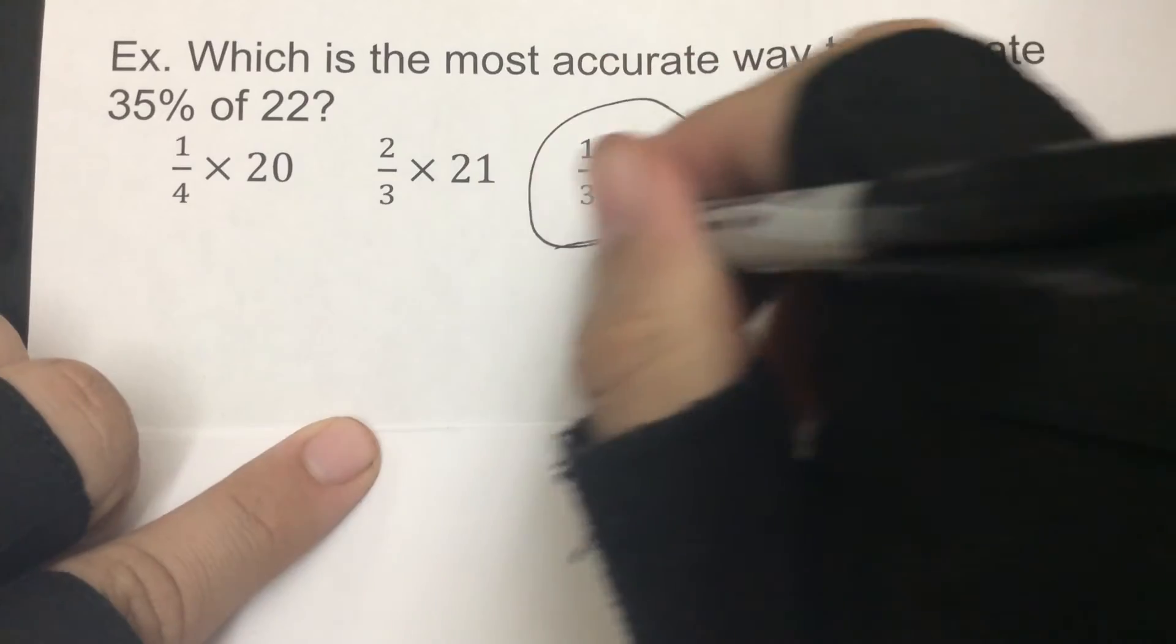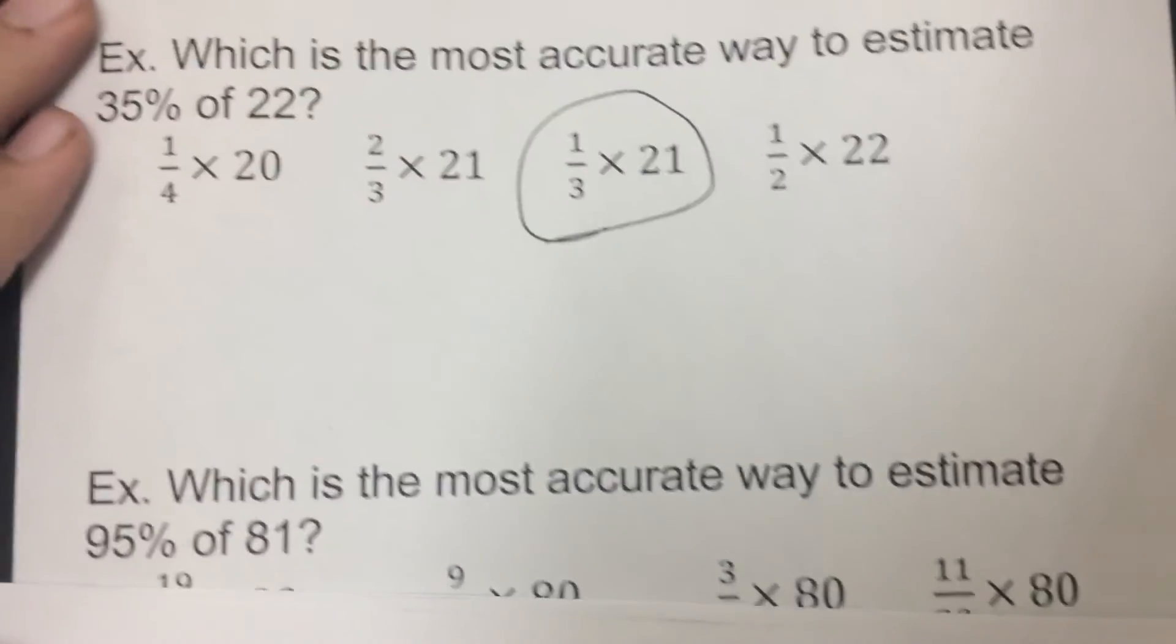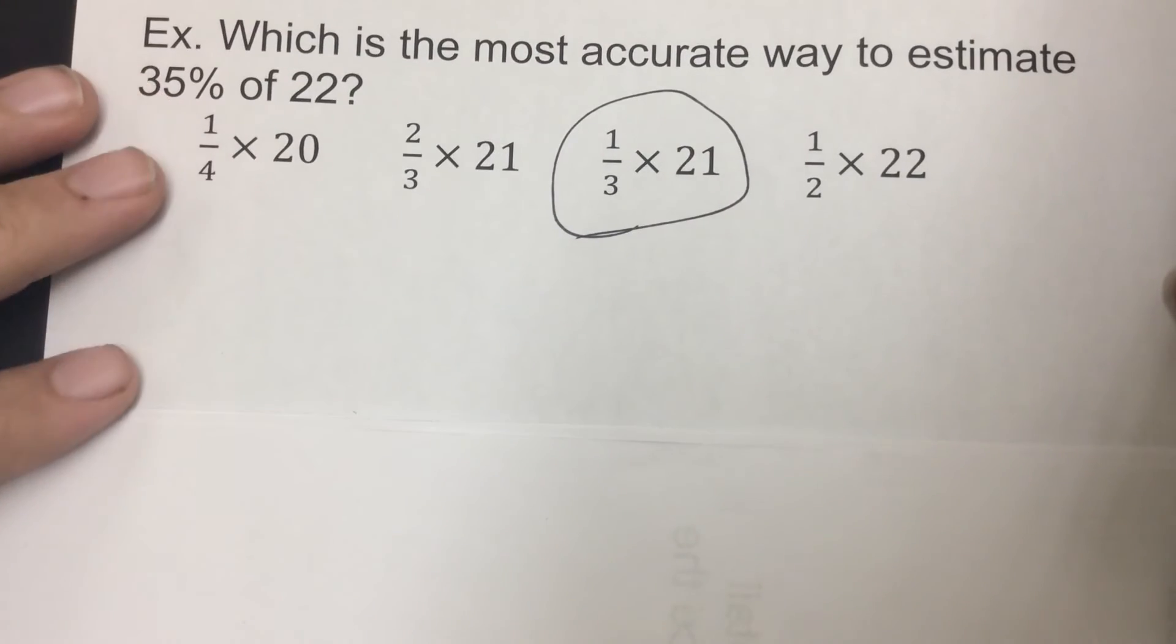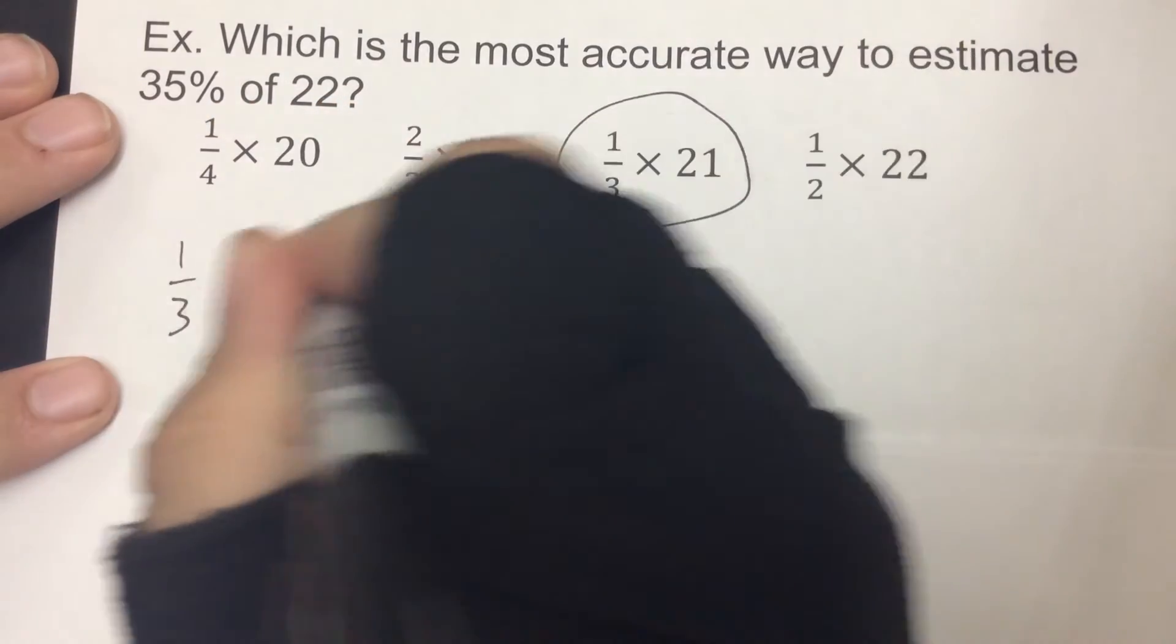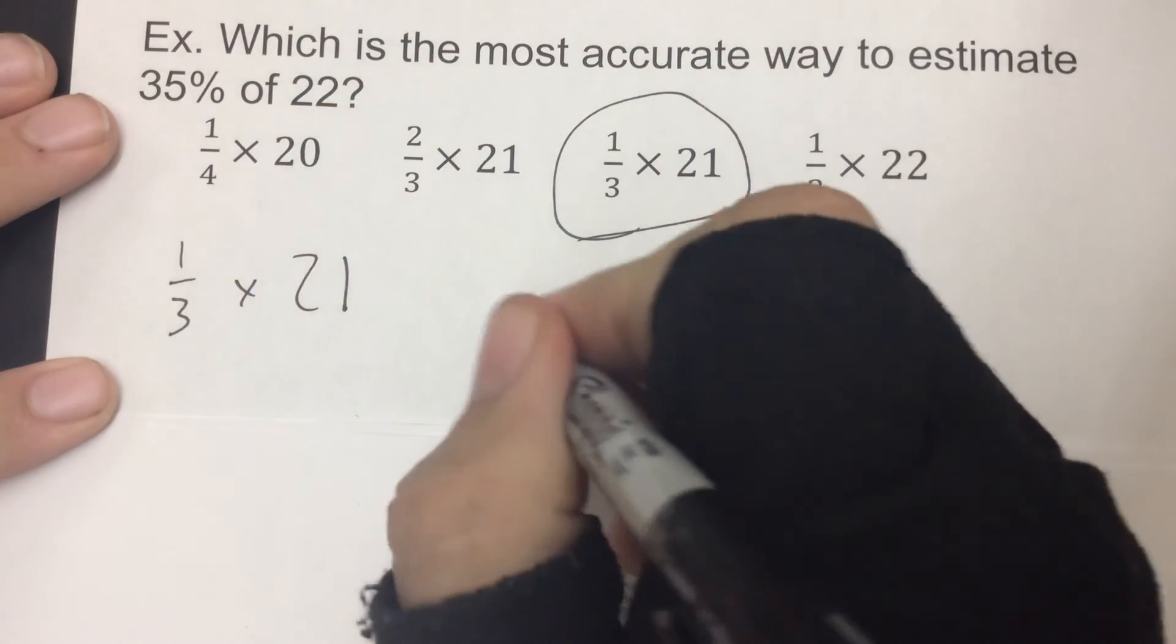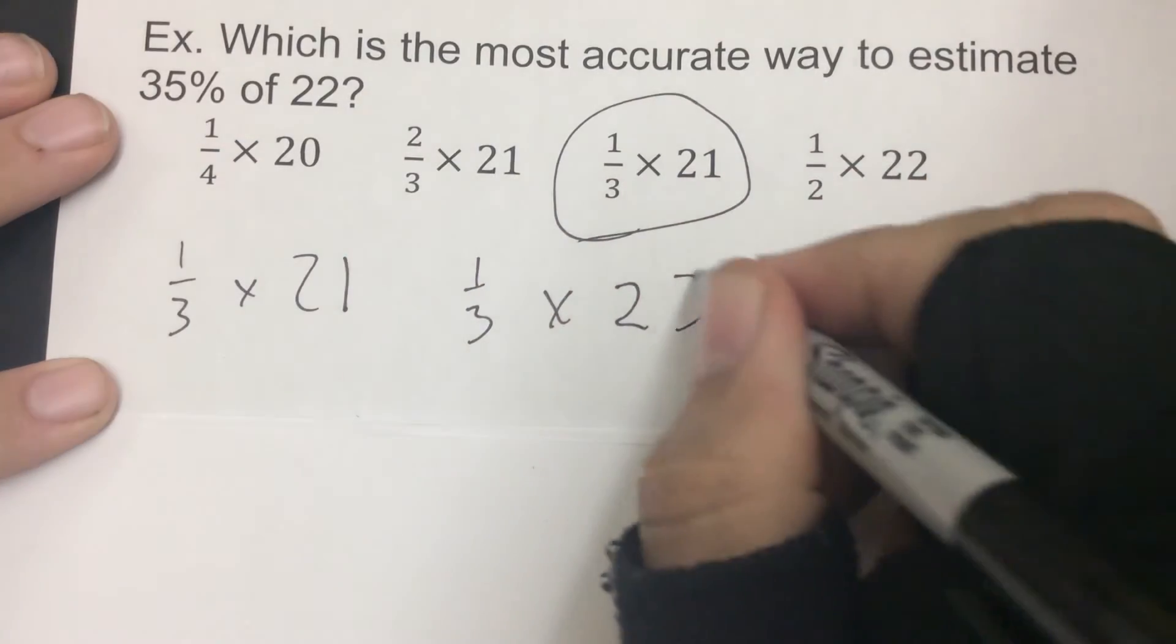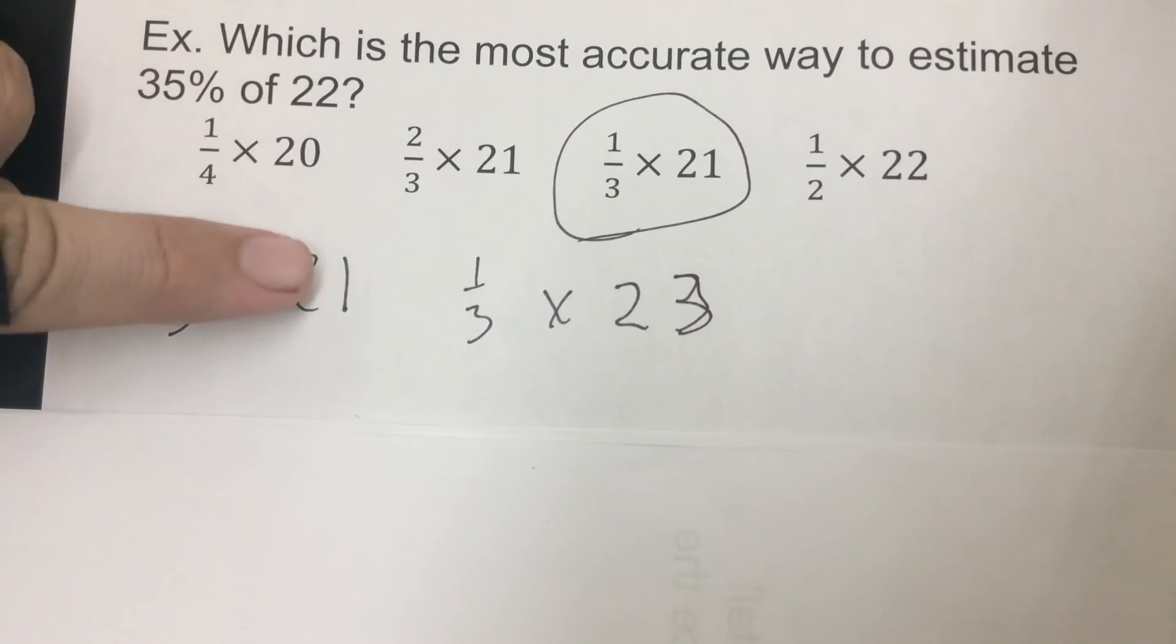And this is another good example. This is where I'm gonna go with this. You're probably gonna see ones like this where it's one-third times 21 or one-third times 23.